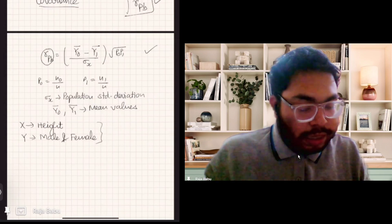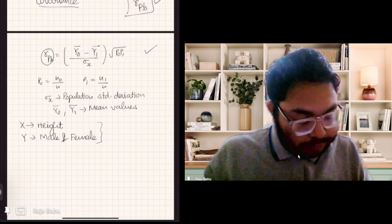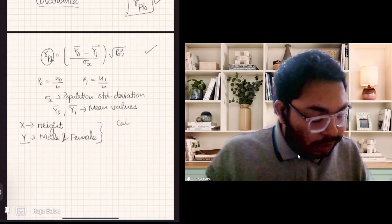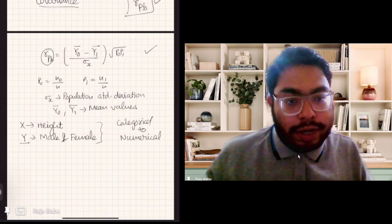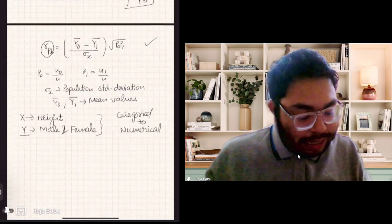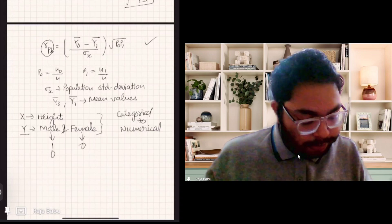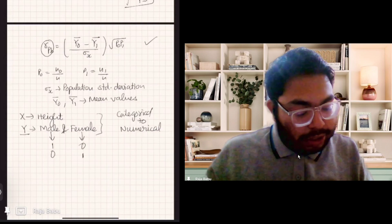So here we have to compute the biserial coefficient. We have to convert this categorical variable to a numerical one. In that case, we have to use some kind of coding — for example, I can denote male by one and female by zero. Similarly, we can use male as zero and female as one. So now we have converted the categorical variable to numerical.